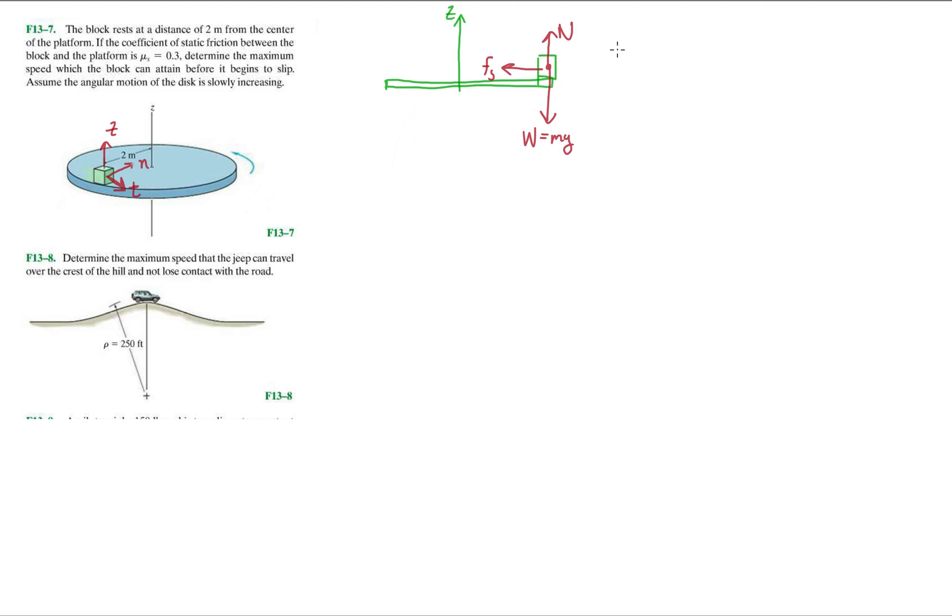Now we're just going to do the equations of motion. Force in the normal direction equals the mass times the acceleration in the normal direction. If we do forces in the z direction, the block is in static equilibrium at that coordinate axis, so we're going to have N - mg = 0. And that tells us that the normal is equal to the weight.